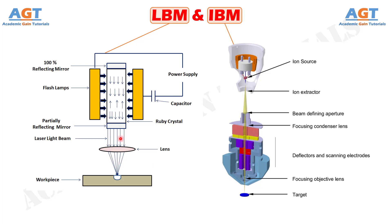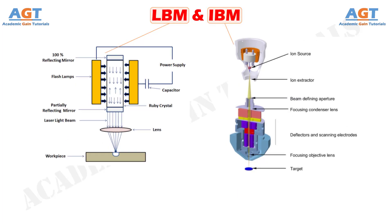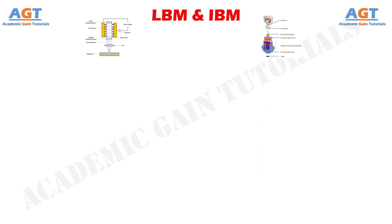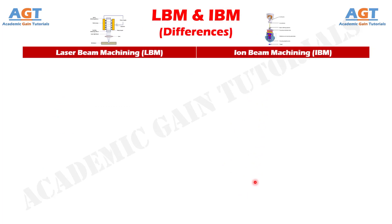Unlike laser beam machining, thermal energy, or heat, has no direct role in removing material. In ion beam machining, a concentrated beam of high-velocity ions is allowed to strike the workpiece surface. Let's look into the basic differences between laser beam machining and ion beam machining in a tabular form.